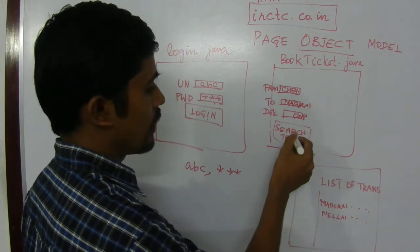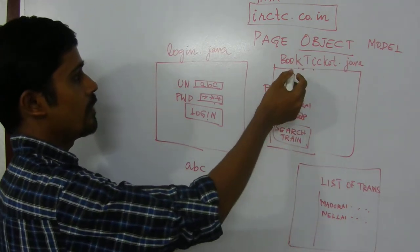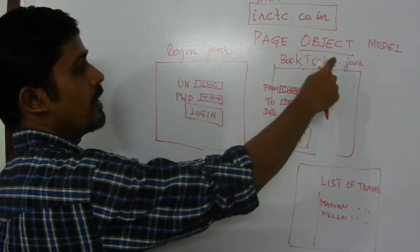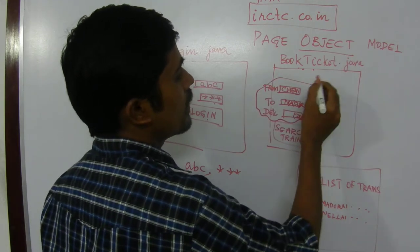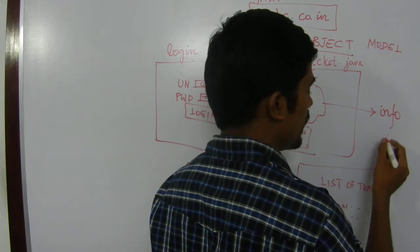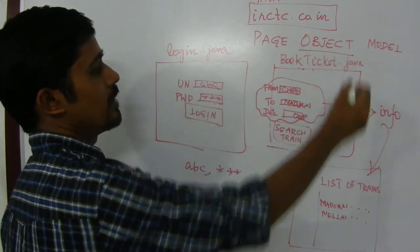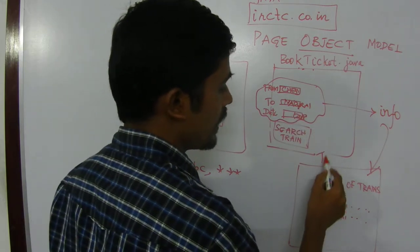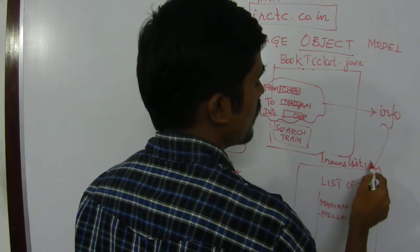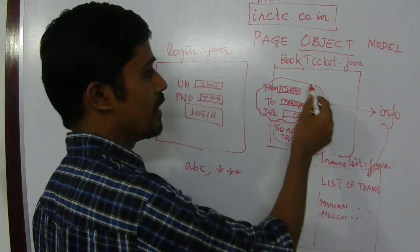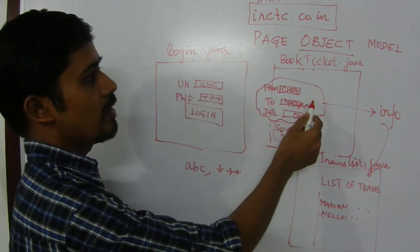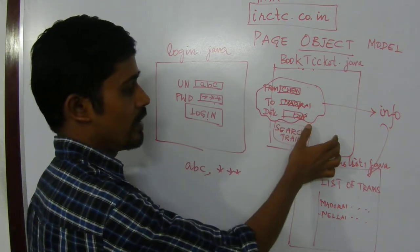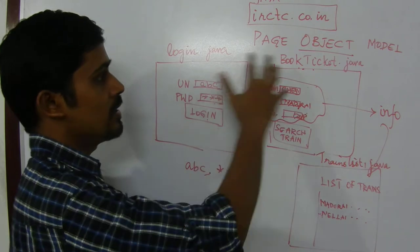For this page, to reach the book ticket page, I am taking all the information from my login page. So the input given to the login page will be considered, and these two inputs are used for displaying this page. Whatever information I am passing here will be considered as input for my next page. This is known as page object model — in page object model, each page is dependent on the previous page's input. The trains list page is dependent on the input given in book ticket dot java, and book ticket dot java is dependent on login dot java.